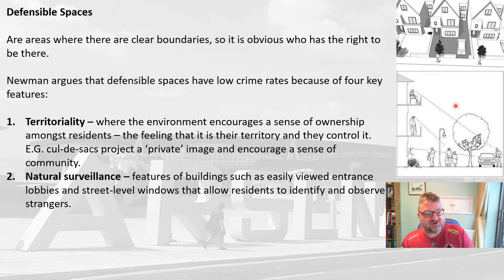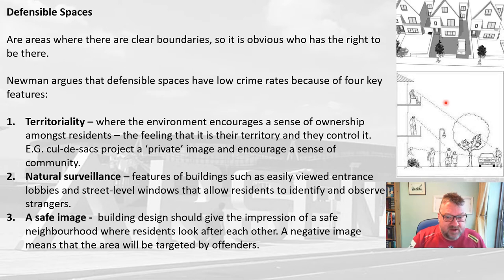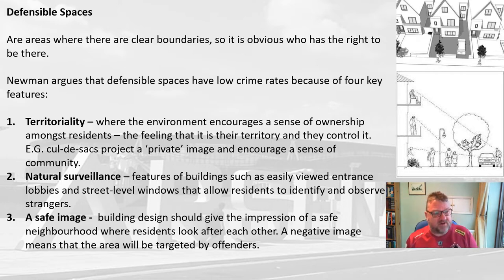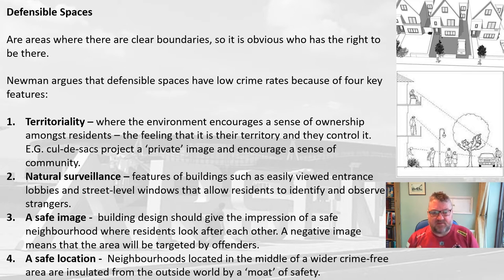Newman stressed the importance of natural surveillance — buildings with easily viewed entrance lobbies and street-level windows so that residents can identify and observe strangers. He also talked about a safe image: building design should give the impression of a safe neighbourhood where residents look after one another. Finally, he talked about having a safe location — neighbourhoods located in the middle of a wider crime-free area become insulated, like a moat of safety. So territoriality, natural surveillance, a safe image and a safe location are what Newman thought would give a relatively crime-free environment.